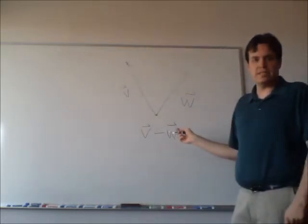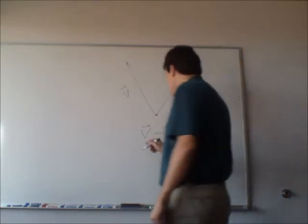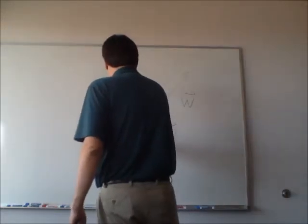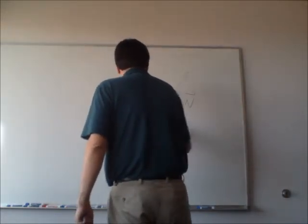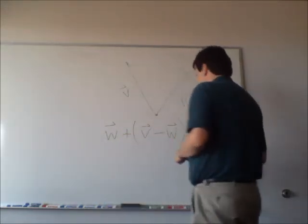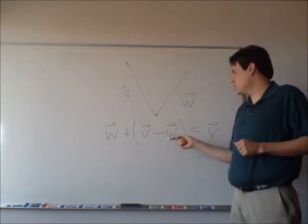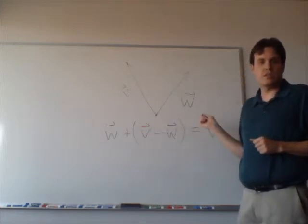I don't know what this is yet, this V minus W. But I do know that by algebra, it should be true that W plus that is equal to V. So if I want to know V minus W, what I'm really looking for is what do I need to add to W in order to get V.